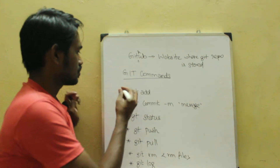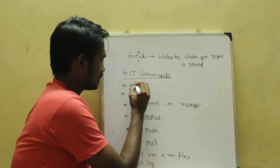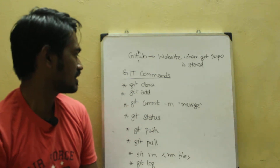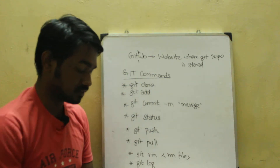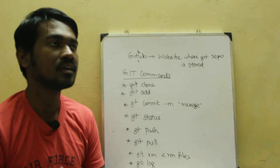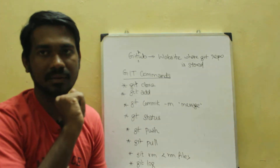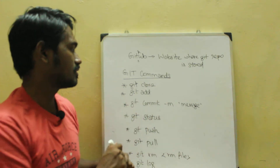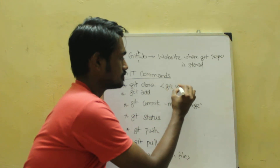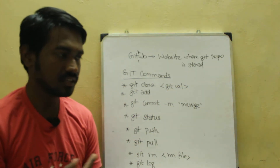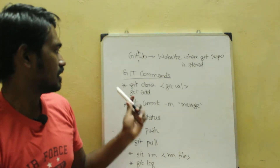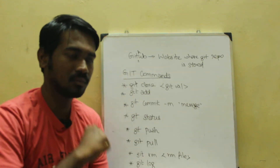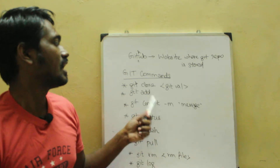Next is git clone. We will talk about how we can create a copy of a repository on our computer. The command is git clone followed by the git URL. If we have a repository, we can download a local copy using git clone.